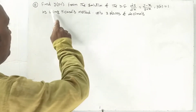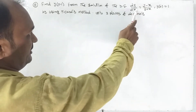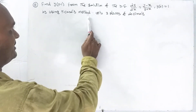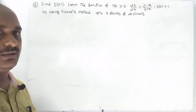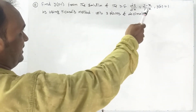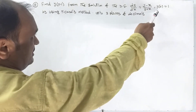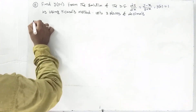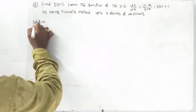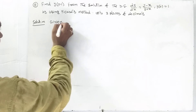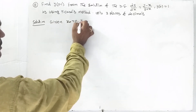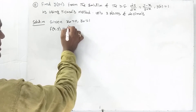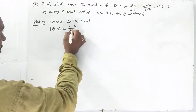Last problem: find y of 0.1 from the solution of the differential equation dy/dx equal to y minus x by y plus x, y of 0 equal to 1, by using Picard's method up to 3 places of decimal. So dy/dx equals y minus x by y plus x, y of 0 equals 1. Given: x₀ equal to 0, y₀ equal to 1, and f of x comma y equals y minus x by y plus x.